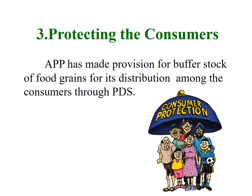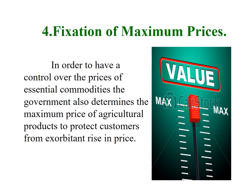The third feature of agricultural price policy is protecting consumers. In order to safeguard the interest of consumers, an agricultural price policy distribution system has been established. The fourth feature is fixing maximum prices. In order to have control over prices of essential commodities, the government usually determines the maximum price of agricultural products so as to protect the general public from an exorbitant rise in prices.